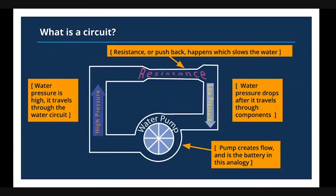So what is a circuit? A circuit refers to an electrical path that transmits electrical current. Electrical current, or electricity, has measurements that consist of voltage, amperage, and current. Current is the name of the flow of electrons, or electricity — the stream of electrons. Voltage and amperage are two different measurements of this current.